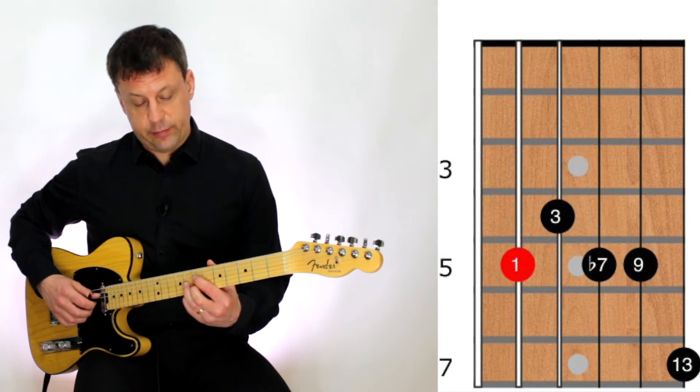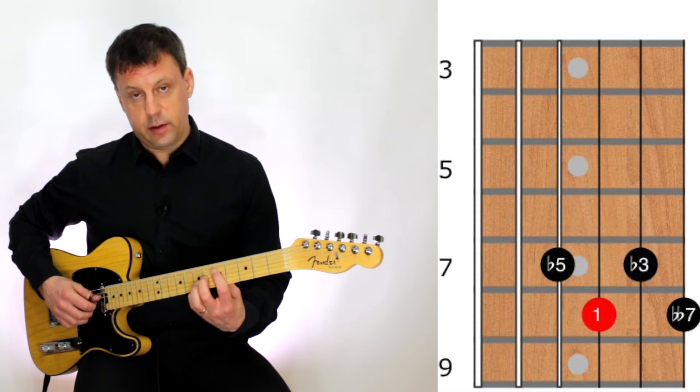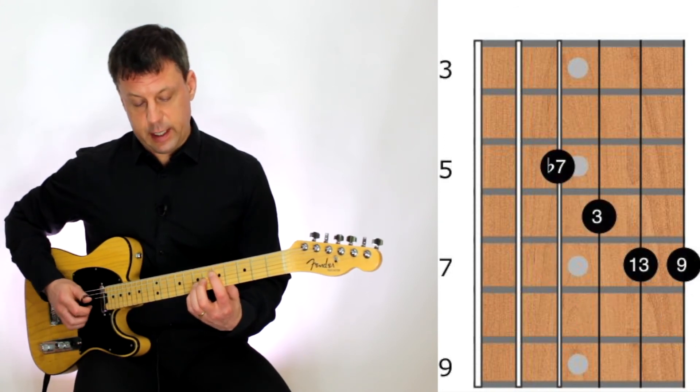Then again, we're going to go to a diminished 7th chord, D sharp diminished 7th, followed by the A13, then A7.